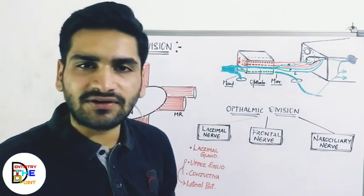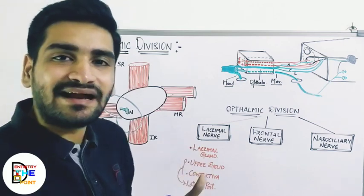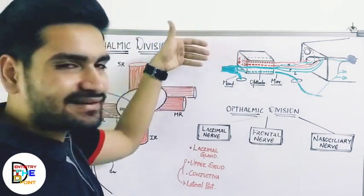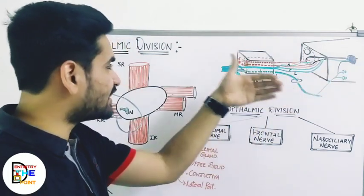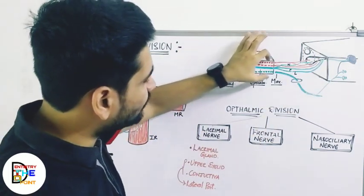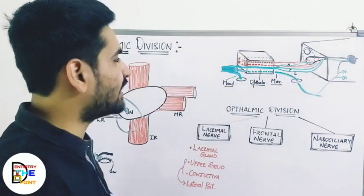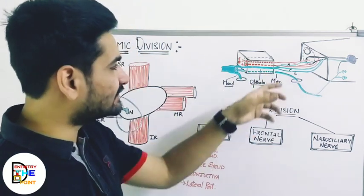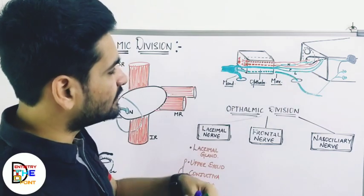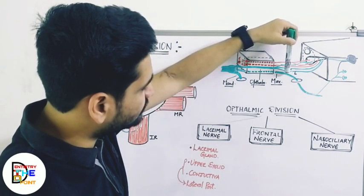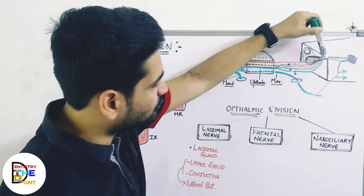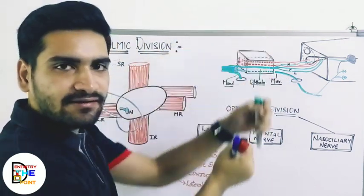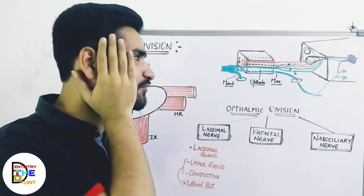This ophthalmic nerve is going to cross through the lateral part — the lateral wall — of the cavernous sinus. It does not pass through the cavity of the cavernous sinus itself; it travels along the lateral wall of cavernous sinus. After crossing through the lateral wall of cavernous sinus, it is going to give three divisions.